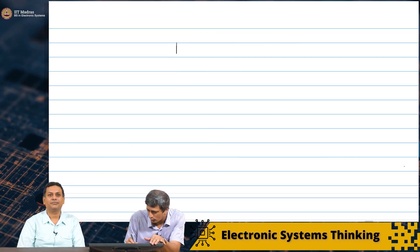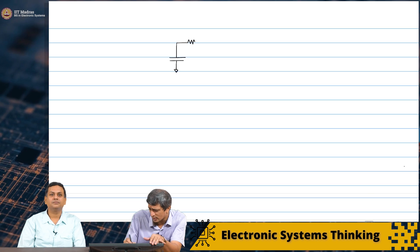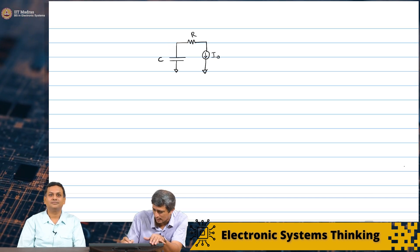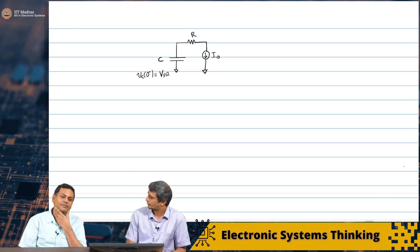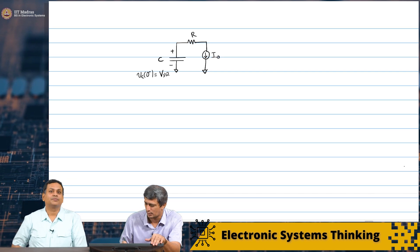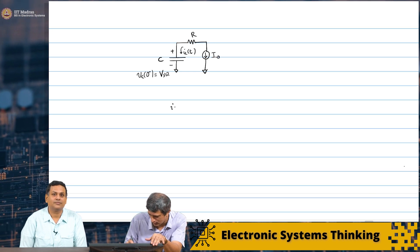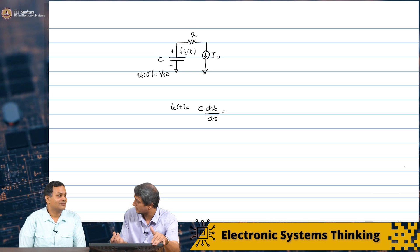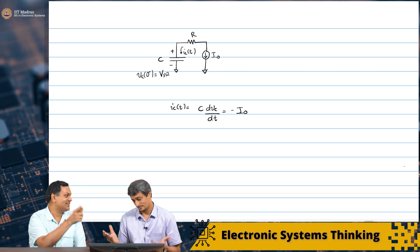Consider this case again — what happens if we put a resistance in series? The equation becomes: I₀, C, R, Vc(0⁻) = Vt. We should write the equation and see. The current Ic of t is C·dVc/dt, and it equals minus I₀, because the same current flows through all series elements. The current through the capacitor is the same as the current through the resistor, which is the same as the current source.